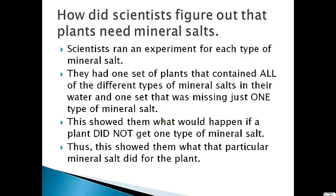For example, let's say they want to test what nitrogen does for a plant. For Group A, they give the plant everything but nitrogen. For Group B, they give the plant everything — all the different minerals. Then they let the plants grow and see what happens. Whatever the plants without nitrogen are missing, that tells scientists that the plants need nitrogen to make that happen. That's basically how they test what different mineral salts do to plants.